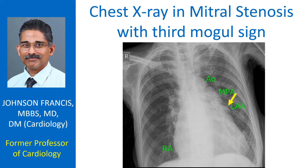The left atrial appendage is seen as a bulge to the left, below the main pulmonary artery segment. This bulge is also known as the third Mughal sign, the first two Mughal signs being the aorta and the main pulmonary artery.